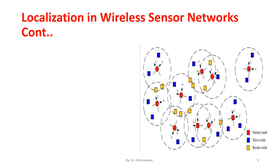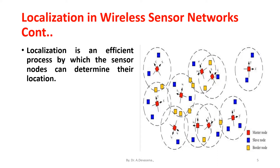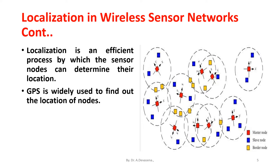Localization is an efficient process by which the sensor nodes can determine the location. GPS is widely used to find out the location of nodes, but it does not provide accurate positional information always.